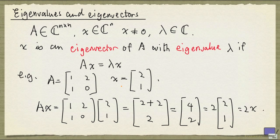So in this case, [2,1] is an eigenvector of this matrix A, and the eigenvalue will be 2. So the question that we are going to address now is how to find eigenvalues and eigenvectors? And for that, we're going to look at characteristic polynomials.